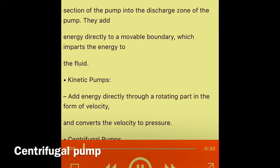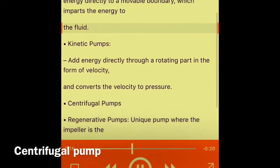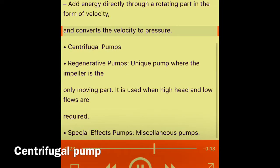Positive displacement pumps operate by forcing a fixed volume of fluid from the inlet pressure section into the discharge zone. They add energy directly to a movable boundary which imparts energy to the fluid. Kinetic pumps add energy directly through a rotating part in the form of velocity and convert the velocity to pressure.